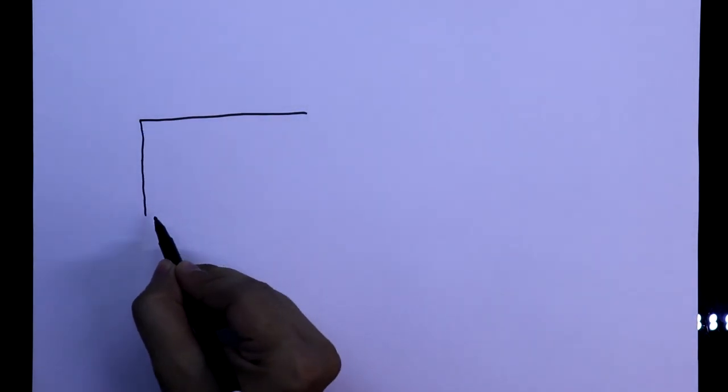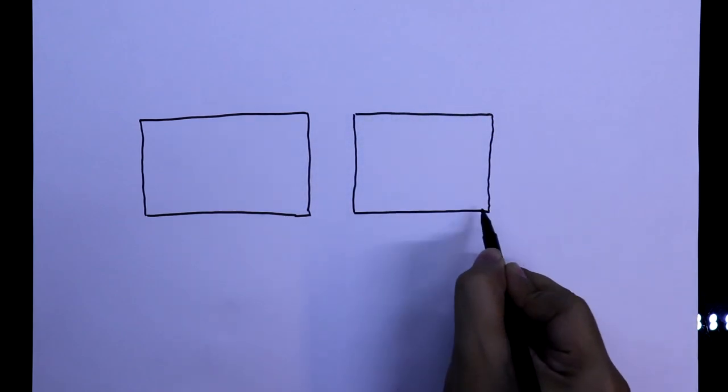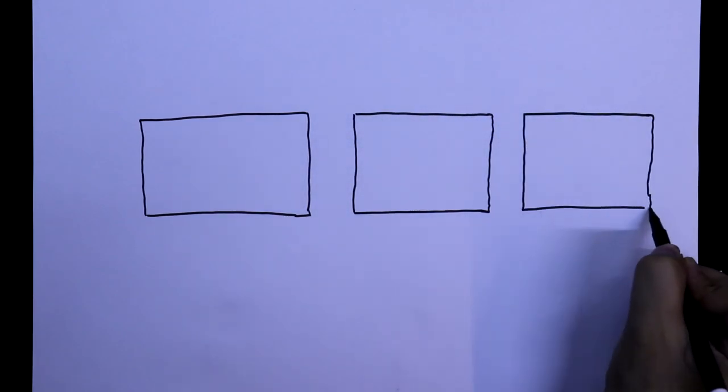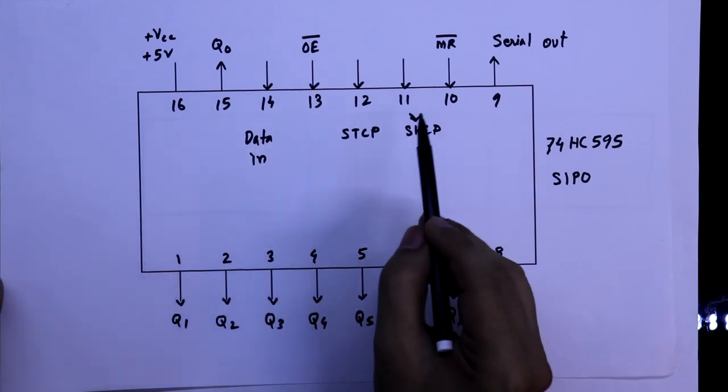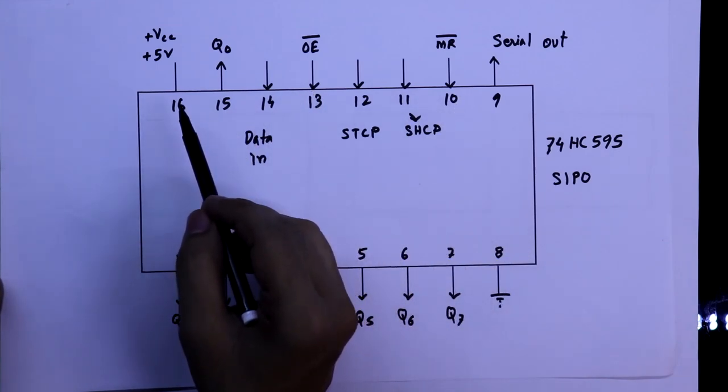For the cascading, I am going to use 3 pieces of IC. This is the first IC, second IC and third IC. Pin 8 and 13 should be connected to the ground and pin 10 and 16 should be connected to the plus VCC.